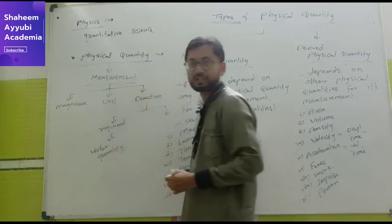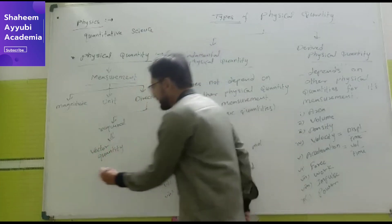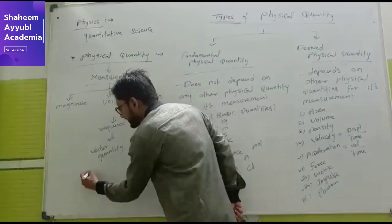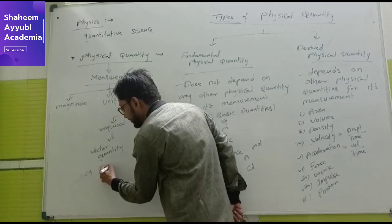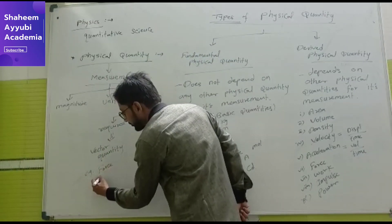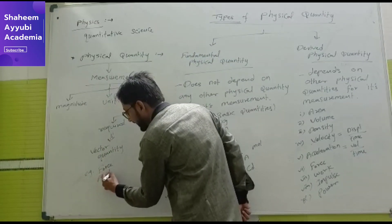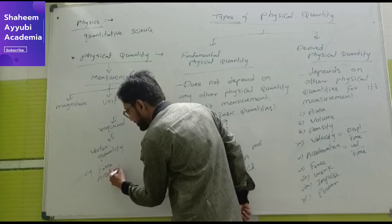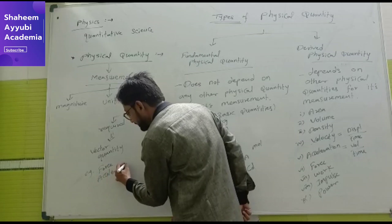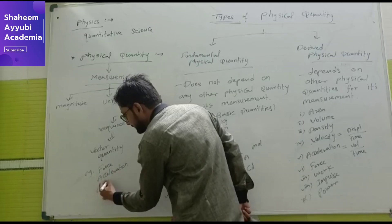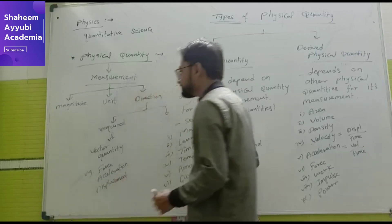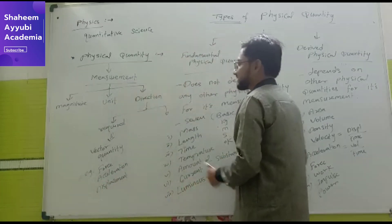If a physical quantity requires both magnitude as well as direction for its complete measurement, then such a physical quantity is called a vector quantity. Examples of vector quantities are force, acceleration, and displacement.